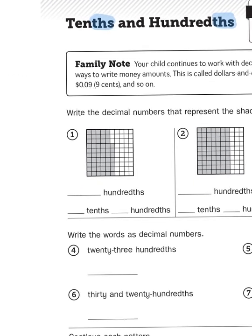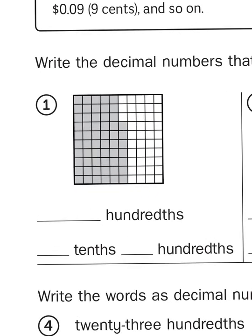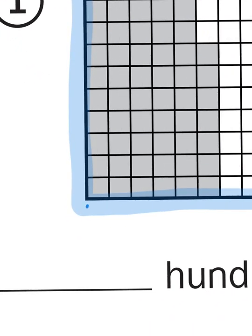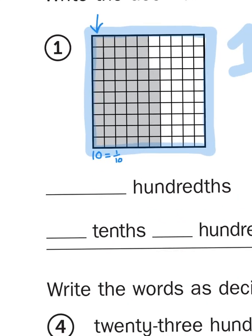Using this model right here, if this grid of 100 little squares represents one whole — so this entire box represents one — what would be the fraction of the box that's shaded in? You can see there are columns of boxes shaded in, and for every column that's shaded in, that represents ten boxes, or one tenth. So ten boxes equals one tenth of the entire whole.